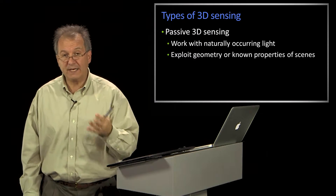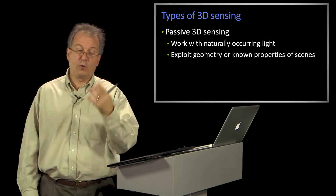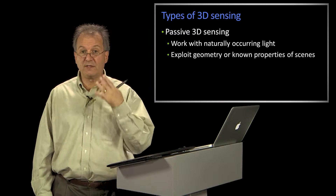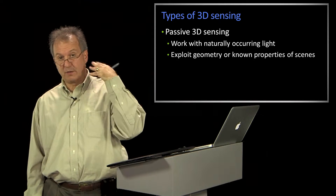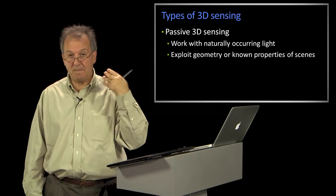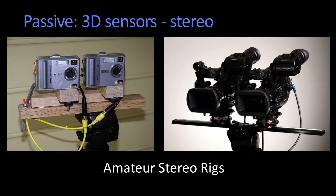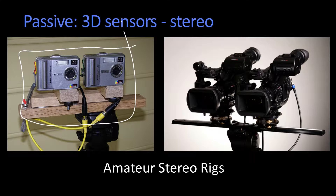So have we actually done something that recovers geometry of the scene? Well, of course we have — we've done stereo. In fact, those of you who are participating in the class for credit have actually matched stereo images. So here's an example of some stereo rigs. These are sort of amateur ones. You know, build a wooden block, screw two cameras on, capture a picture.